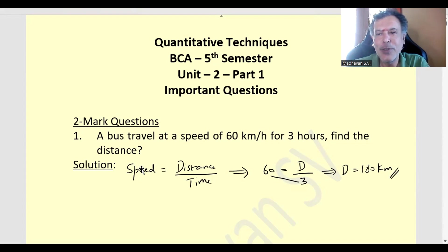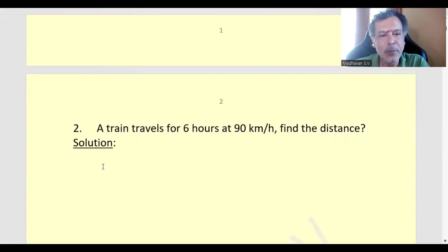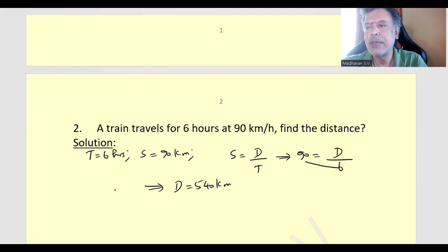That is the first part of the question, let us move on to the second question. A train travels for 6 hours at 90 km per hour. Again, here we have to find out the distance. Speed is equal to distance divided by time, which means 90 equals D divided by 6. So the distance travelled is 540 km. That is our second question.